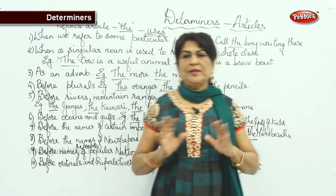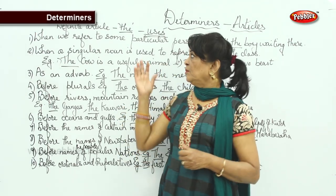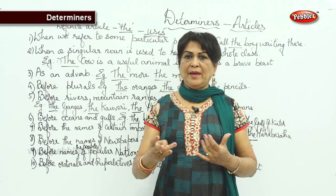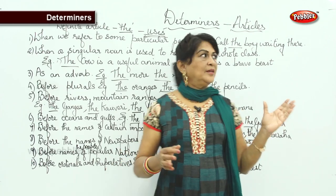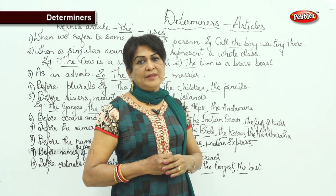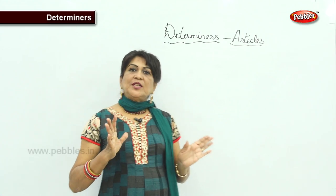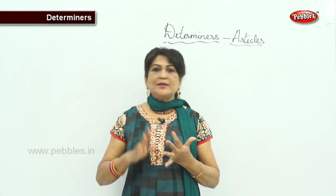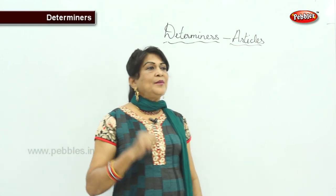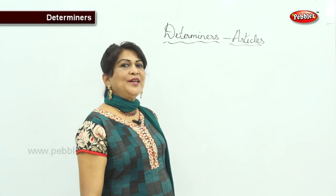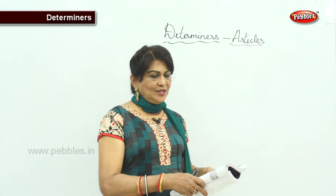Now I am sure you have a very wide idea of how 'the', 'a', and 'an' are used. These are called the articles — definite articles and indefinite articles. 'The' is a definite article and 'a' and 'an' are indefinite articles. I have discussed both types with you. Now I am going to give you a 10-mark test. It is very easy and you are sure to get a star.